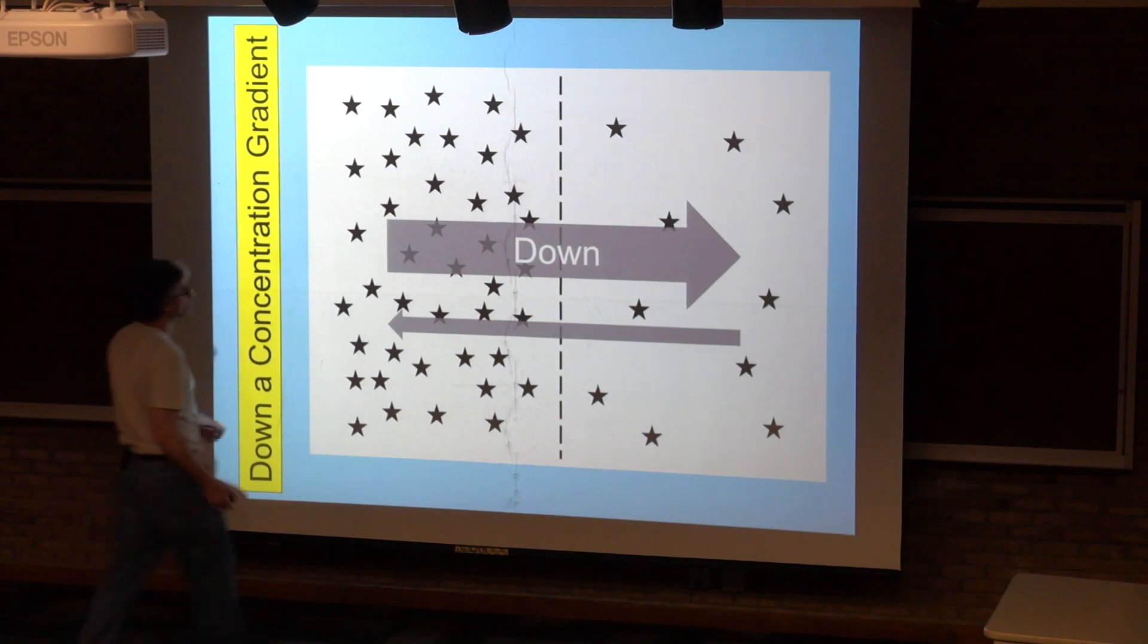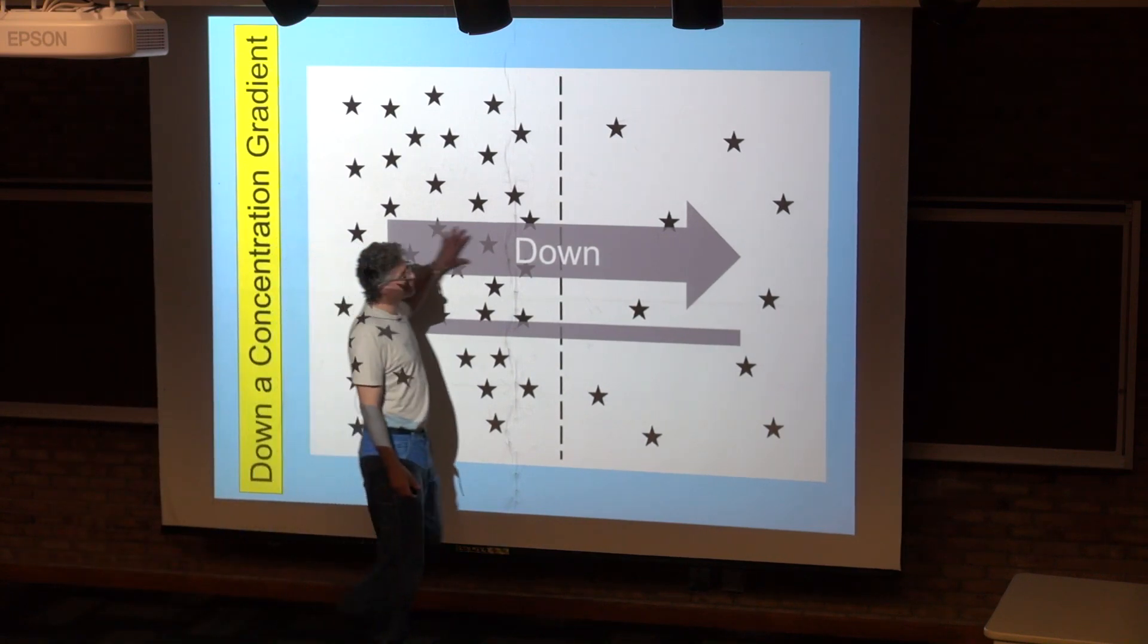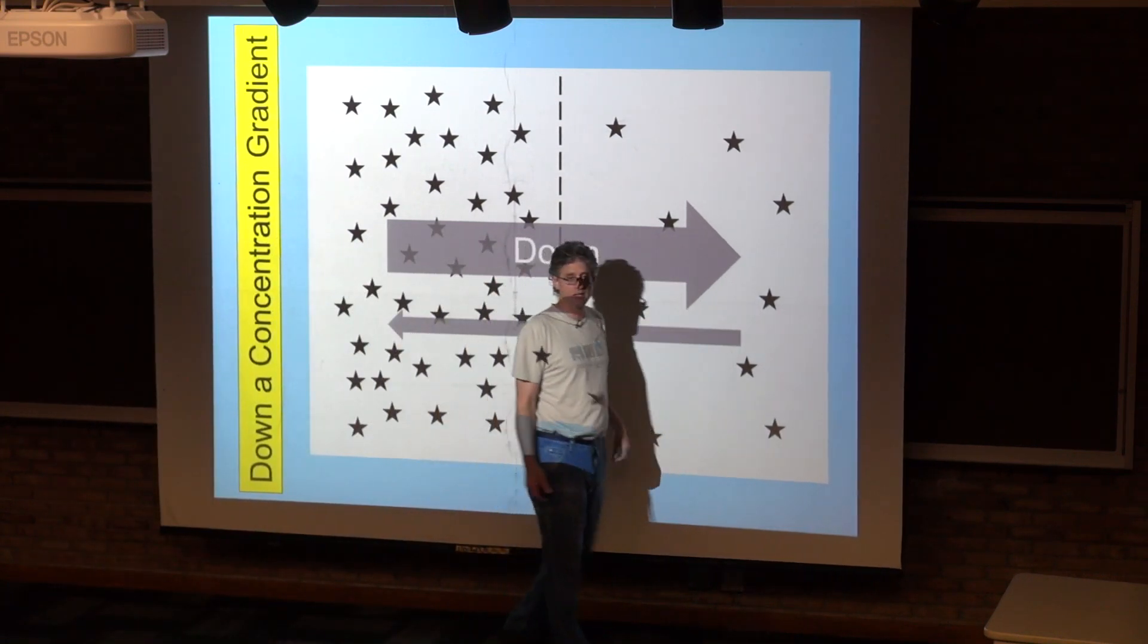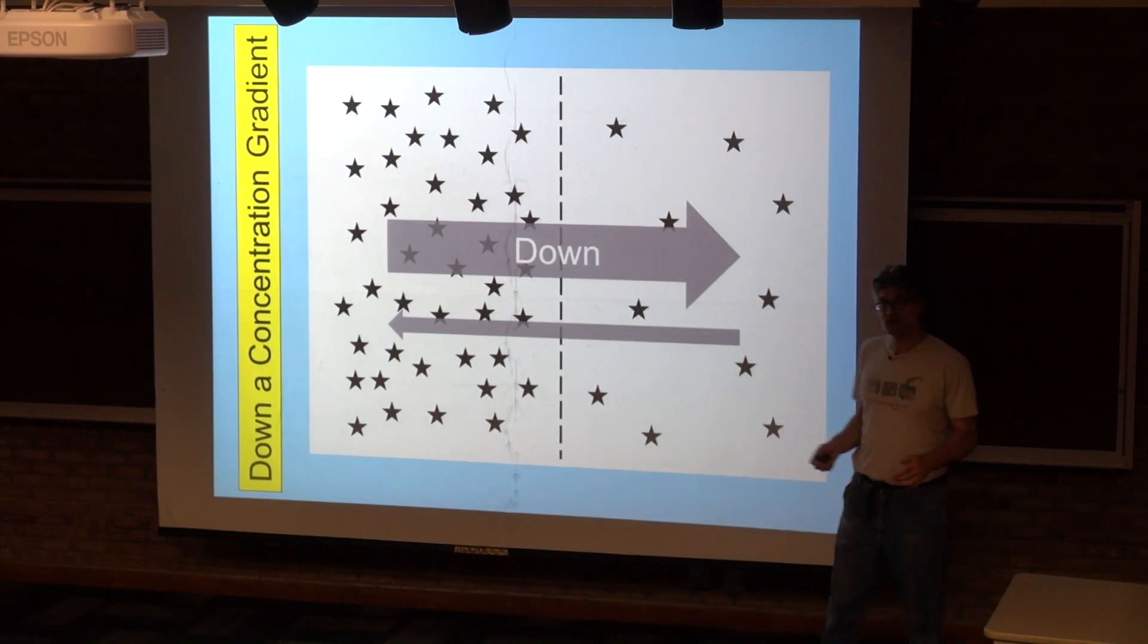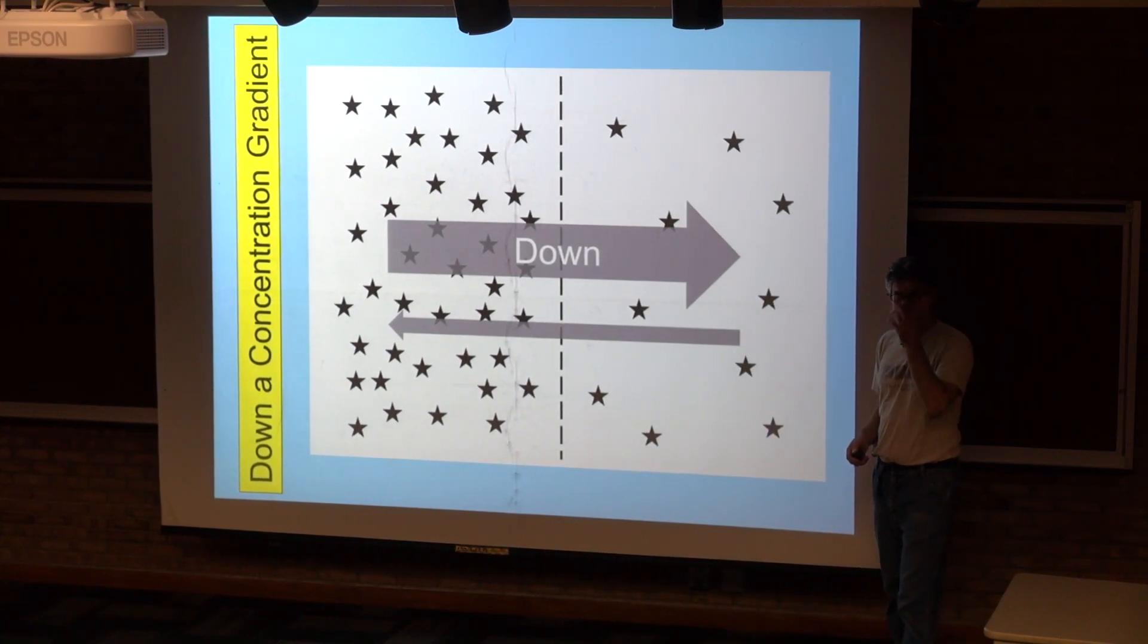So this is perturbed away from equilibrium. This is movement down a concentration gradient. Things will tend to net move down a concentration gradient if you allow them to.